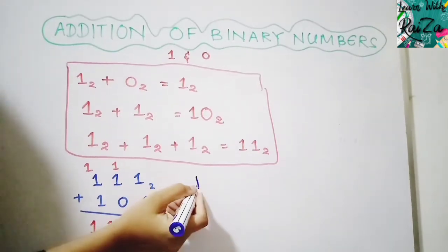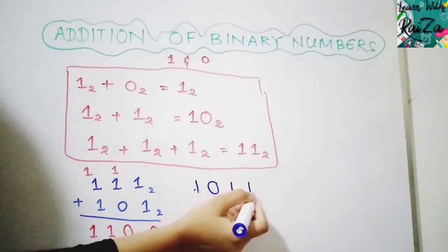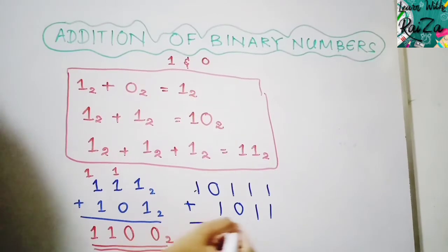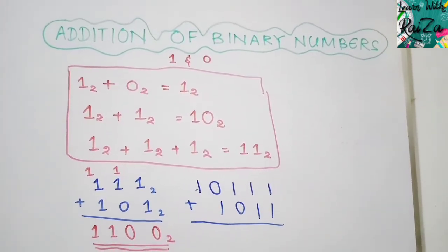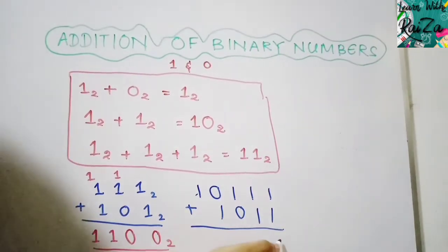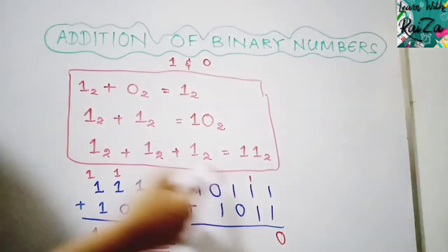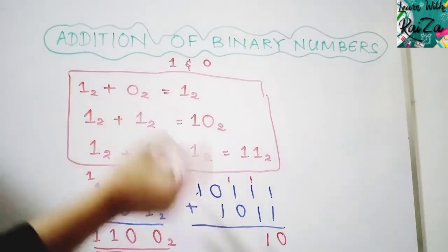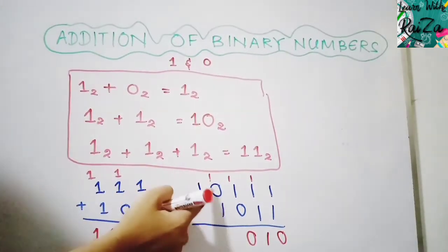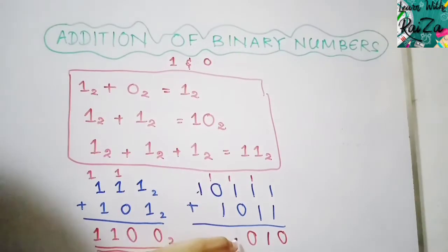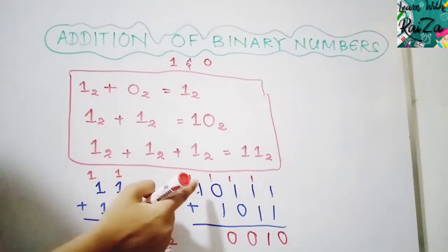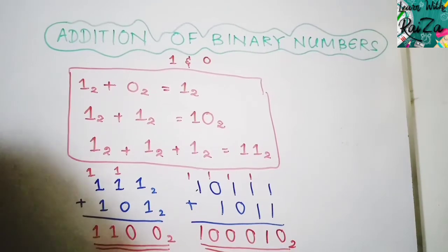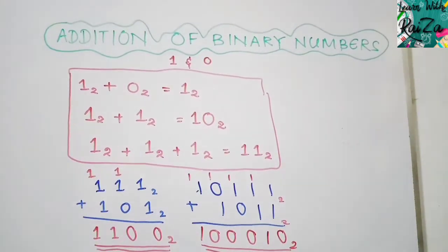Another addition example: 1101 + 1101. Rightmost: 1+1 = 10, write 0 carry 1. Next: 1+1+1 (carry) = 11, write 1 carry 1. Next: 1+1+1 = 11, write 1 carry 1. Next: 0+1+1 = 10, write 0 carry 1. Then 1+1 = 10, write 0 carry 1. The answer is 11010 to the base 2. All numbers are binary.